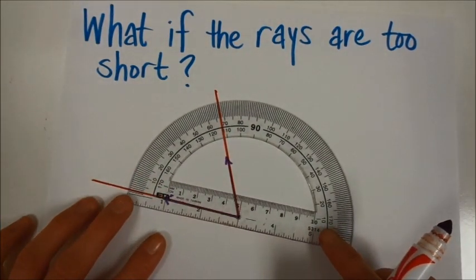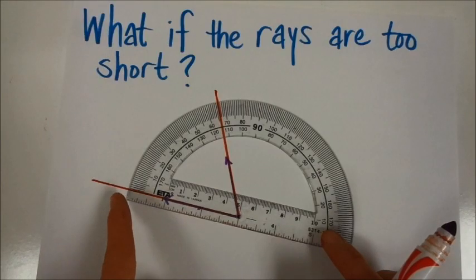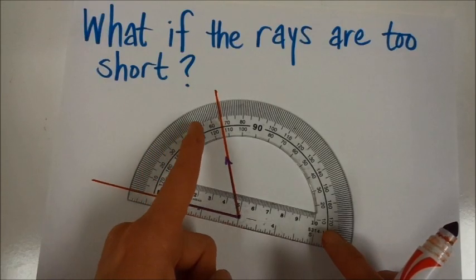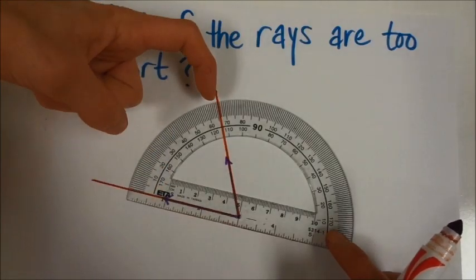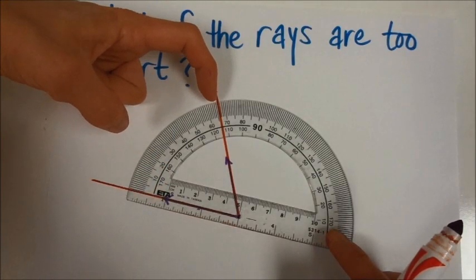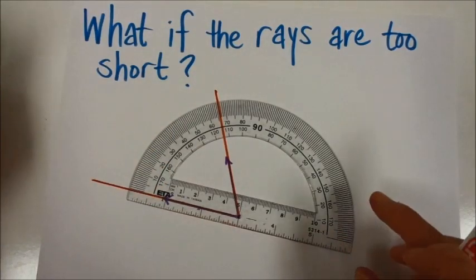And then you can measure it just like you would any other angle, lining up the point, lining it up here, thinking about that it's opening, it's an acute angle, it's something between 60 and 70. This looks like it's just a little bit bigger than 65, so we'll call this one 66 degrees.